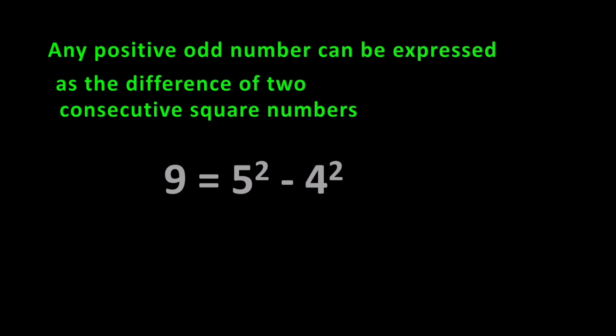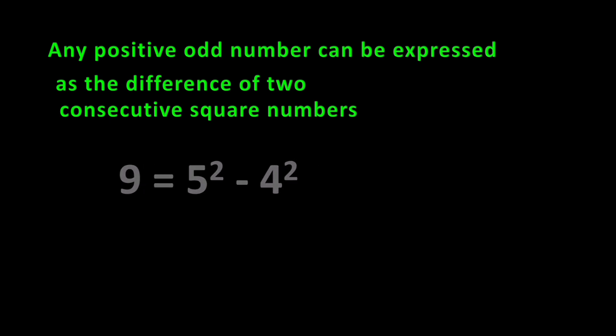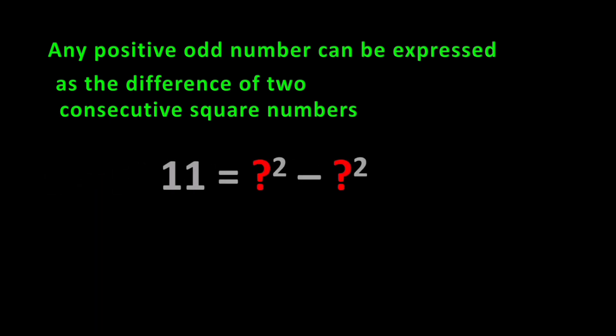Five plus four equals nine — nine is divided in such a way that their sum is nine. If you have observed this pattern, you can find the form. Express eleven as the difference of two consecutive square numbers and find it.